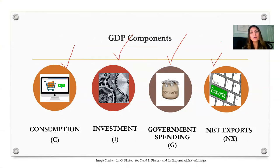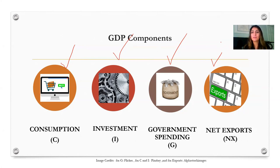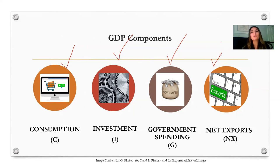In the United States, the consumption category represents the single largest factor of spending, constituting 70% of the entire GDP. Business investment refers to spending on capital goods such as machinery and equipment that increase economic productive capacity, including computers, airplanes, and office furniture. When a household buys a new house, that is also counted in investment spending as residential investment. Government spending refers to spending on goods and services by federal, state, and local governments.